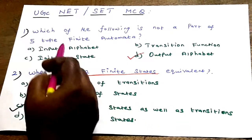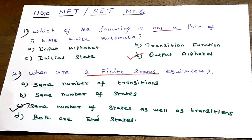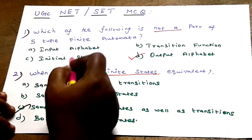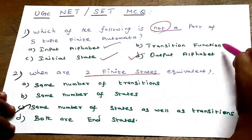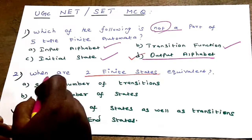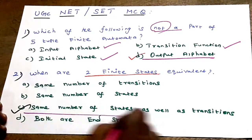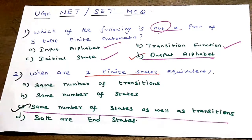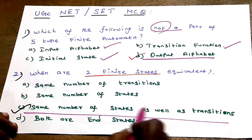Automata theory with answers — UGC Net question: which of the following is not a part of the 5-tuple finite automata? Finite automata consists of 5 tuples, that is 5 elements. The 5 elements and symbols are: input alphabet, initial state, transition function. The option that does not belong is admin output. The answer is C — same number of states as well as transition.